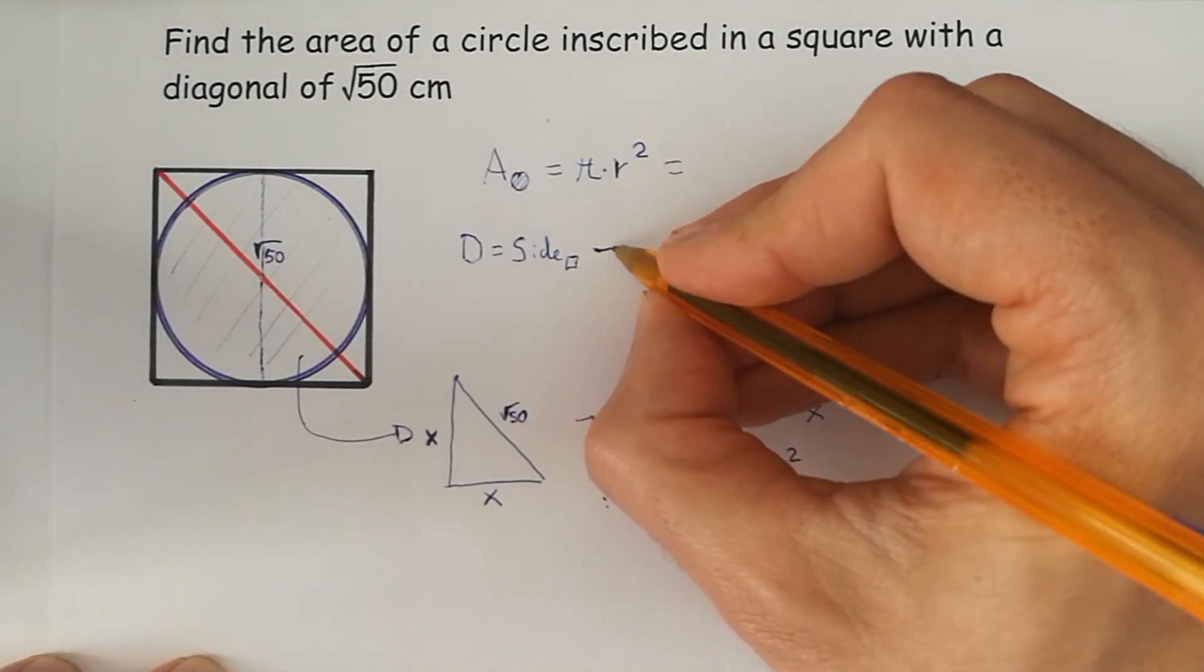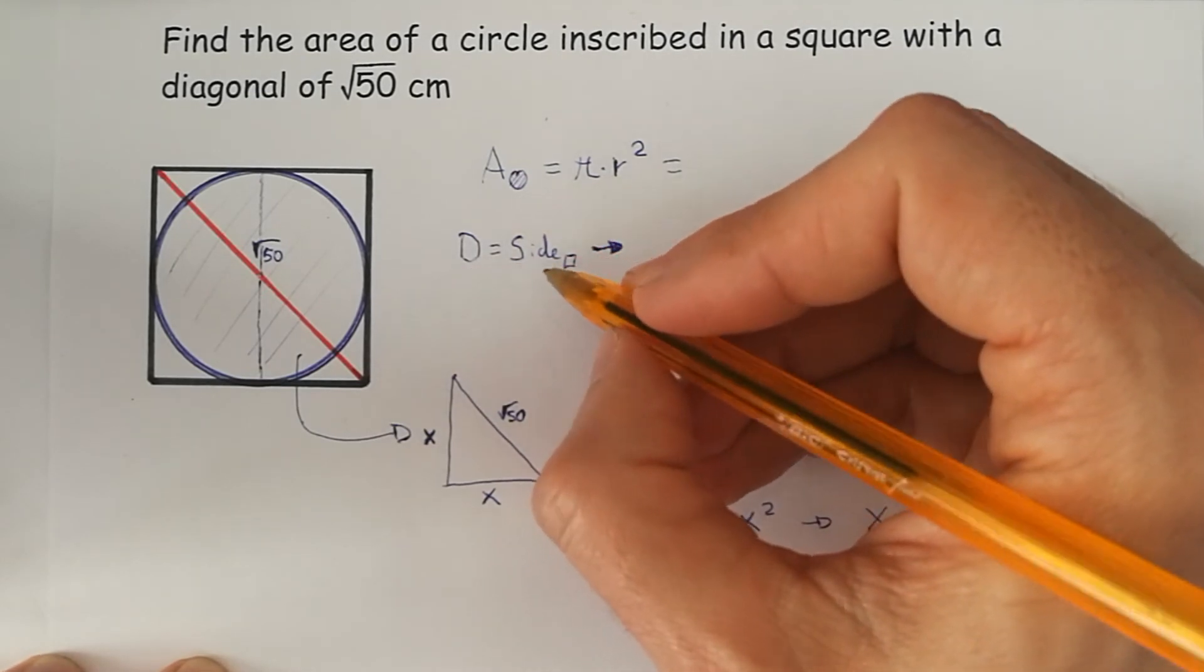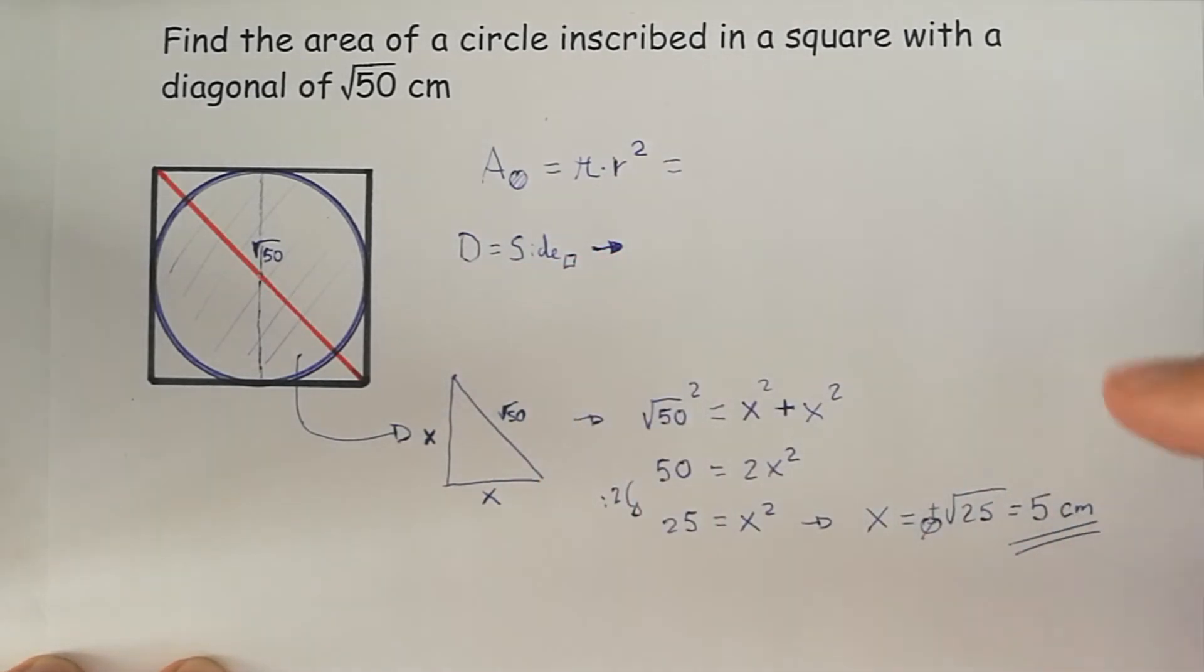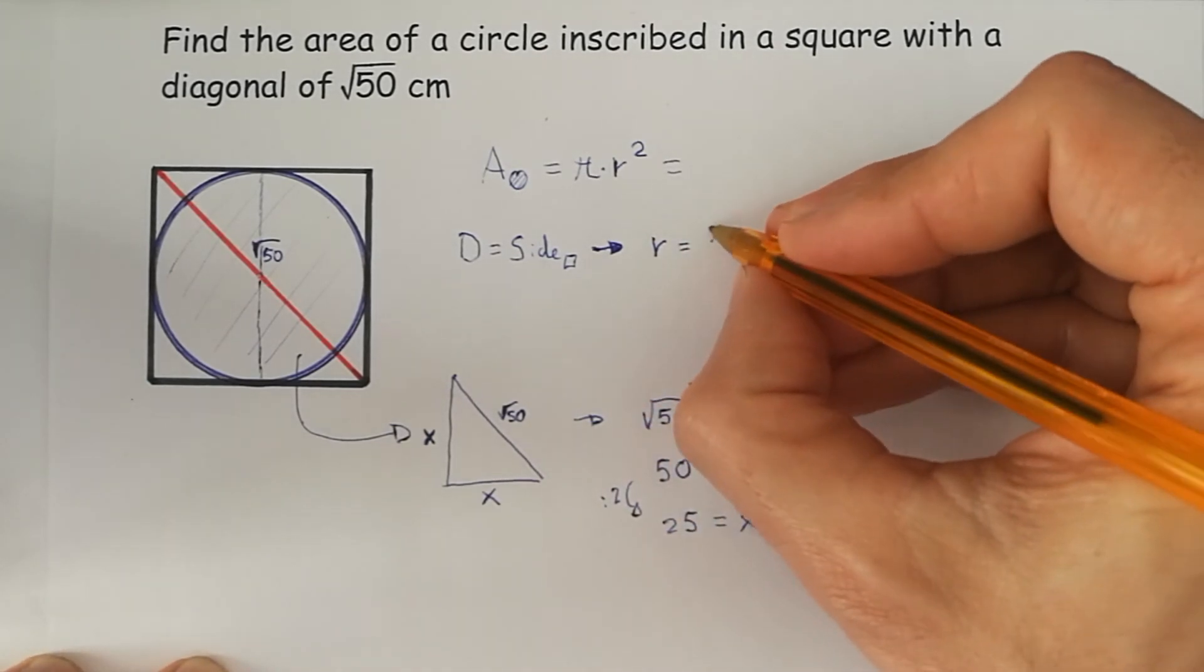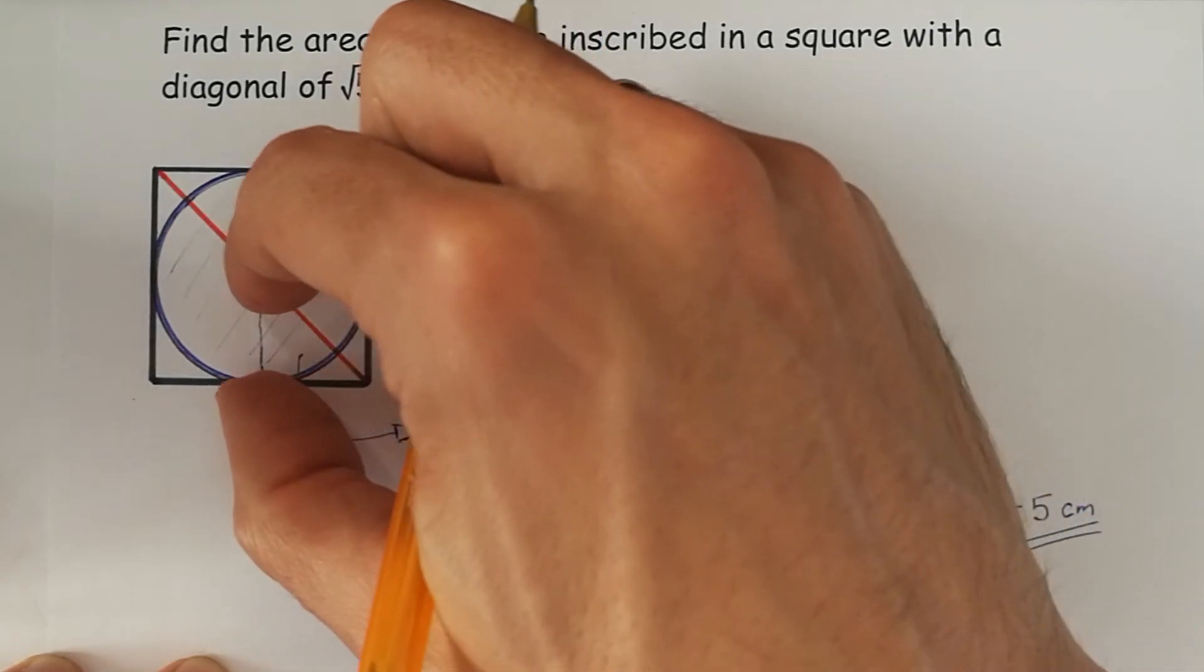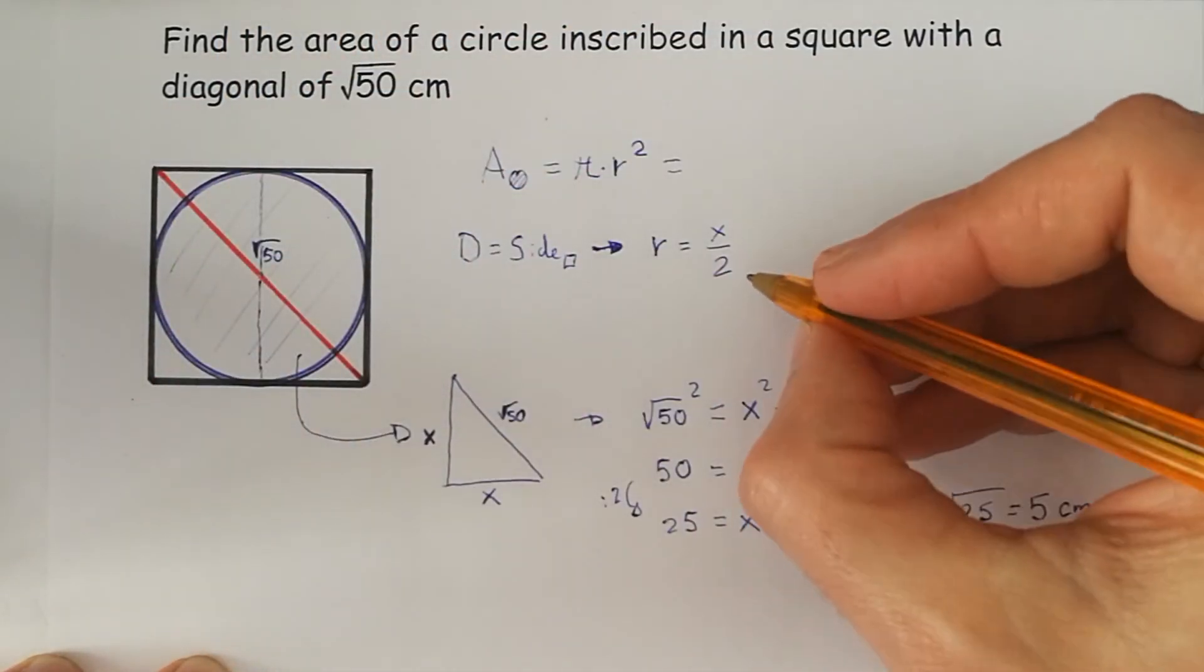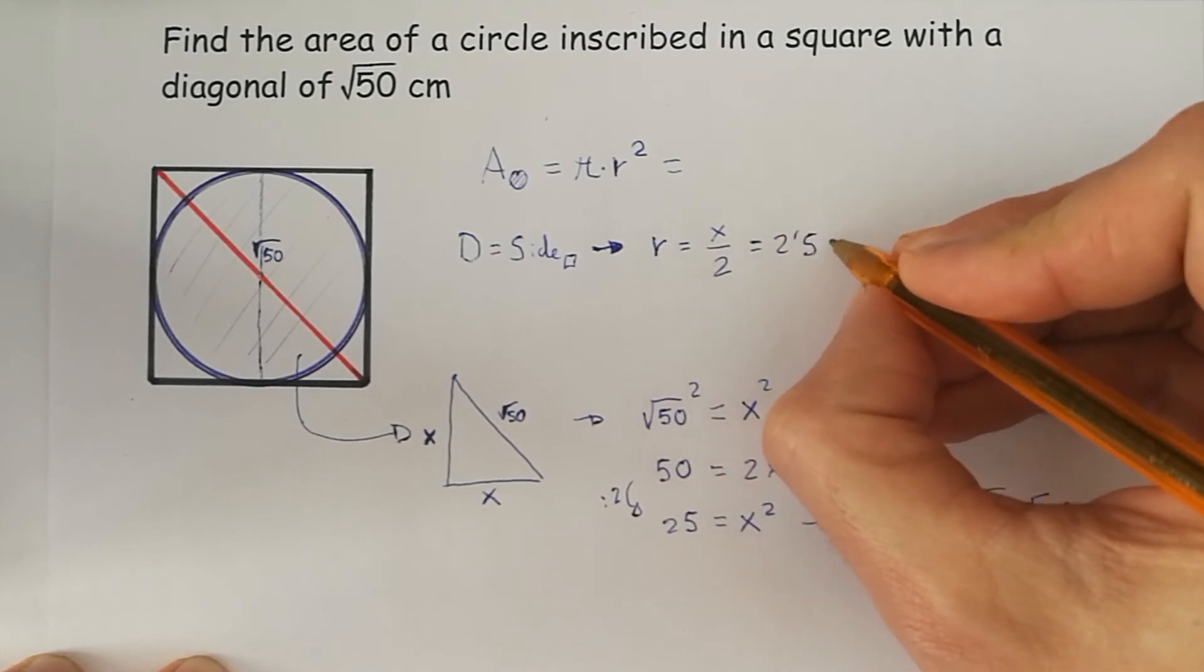Now we go back here and if the diameter is the length of the side, the radius would be x halves, or the side over 2 is just in the midpoint. So this is 2.5 centimeters.